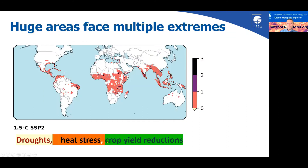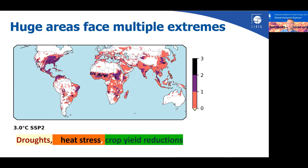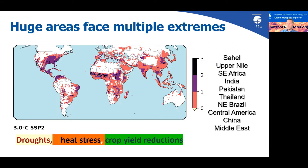The analysis also helped us identify locations facing multiple overlapping risks such as droughts, heat stress and crop yield reductions, and the areas impacted and the number of people impacted significantly increase at higher levels of global warming. This occurs particularly in areas such as northern Africa, Southeast Africa, South Asia — like India and Pakistan — Southeast Asia, Northeast Brazil and Central America, and the Middle East.